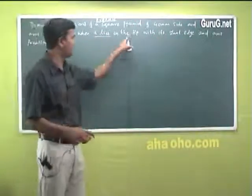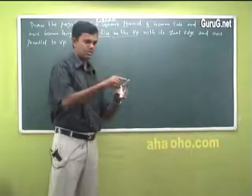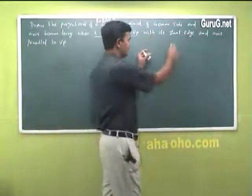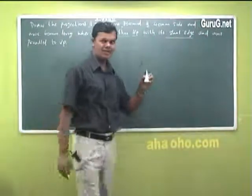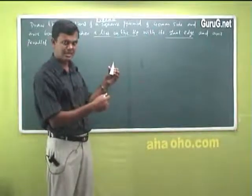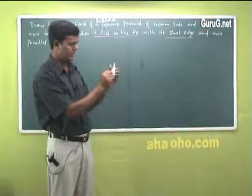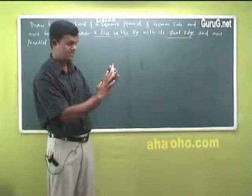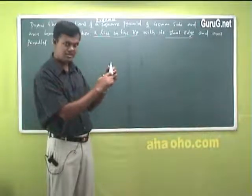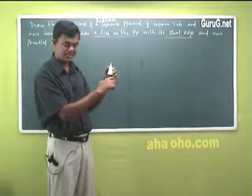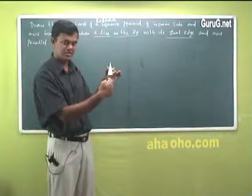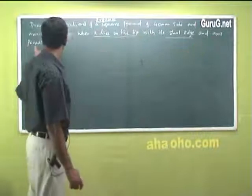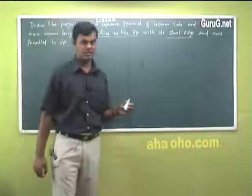When it lies on the HP — the word 'on the HP' means on top of the XY line itself — with its slant edge. These are called slant edges. This is a side, but this is an edge — a base edge. I have four base edges, and these are slant edges.